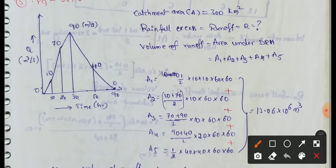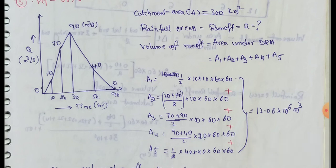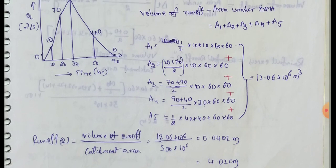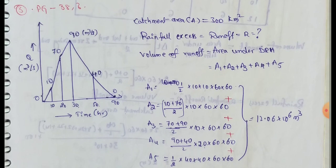If we calculate these five areas, we have total 12.06 into 10 power 6 meter cube. This is the total area under DRH.